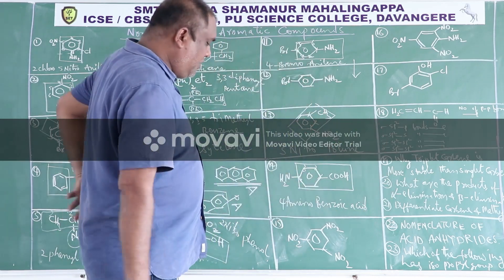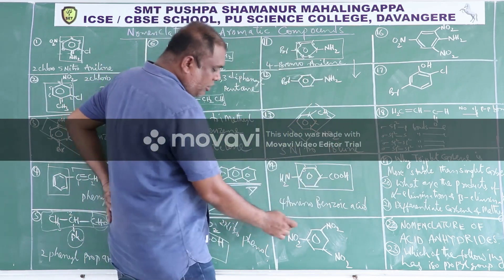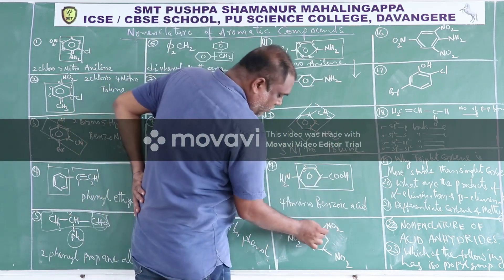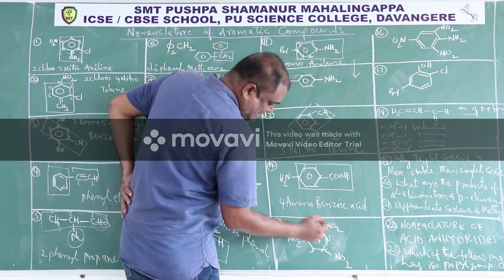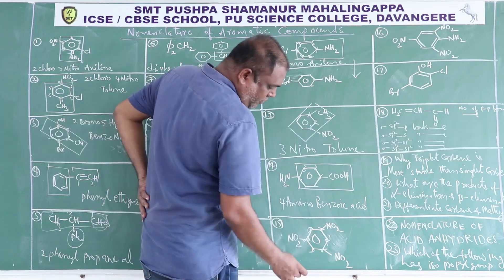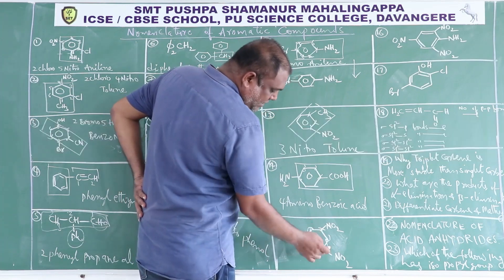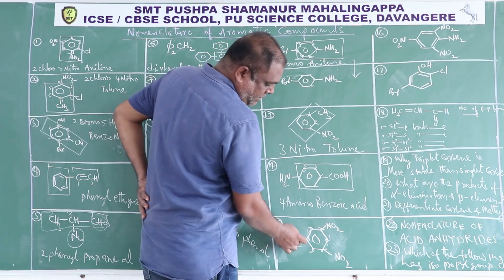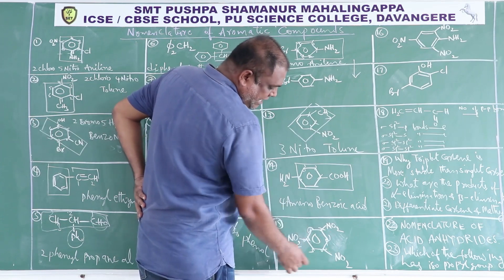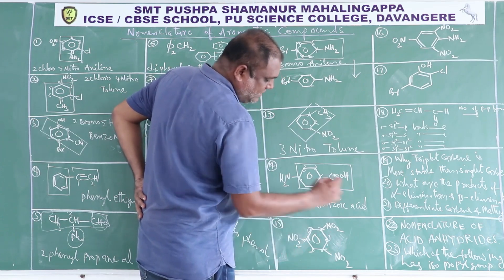Here all substituents are nitro groups. Numbering 1, 2, 3, 4, 5, 6: the nitro groups are at positions 1, 3, and 5. The IUPAC name is 1,3,5-trinitrobenzene.